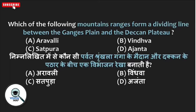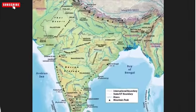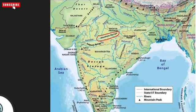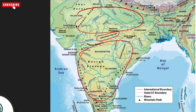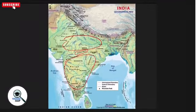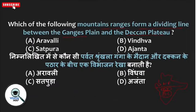The question says: which of the following mountain ranges forms a dividing line between the Ganga plain and the Deccan Plateau? As you know, India is divided into several geophysical features. Looking at the options, option B is the correct answer.